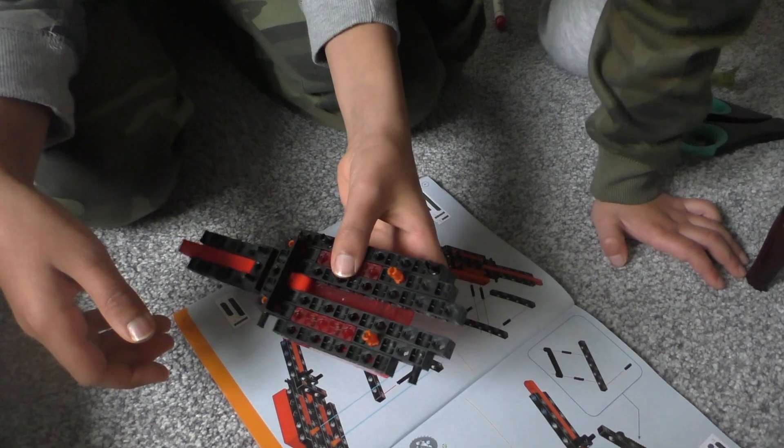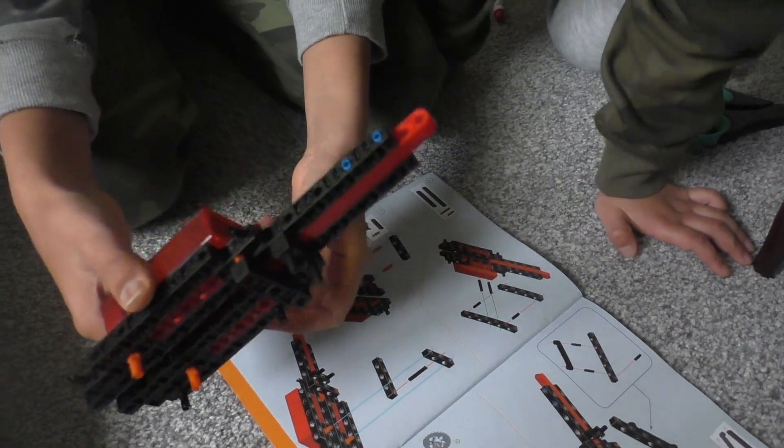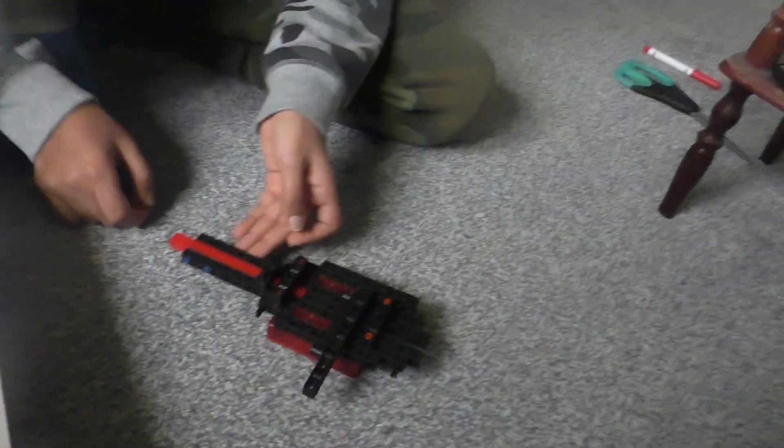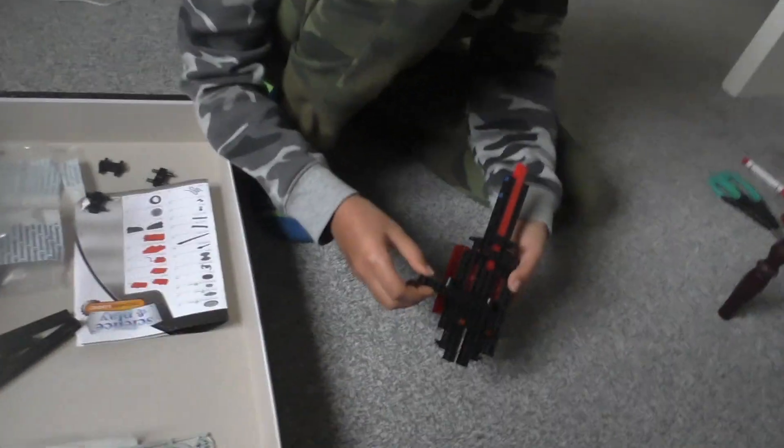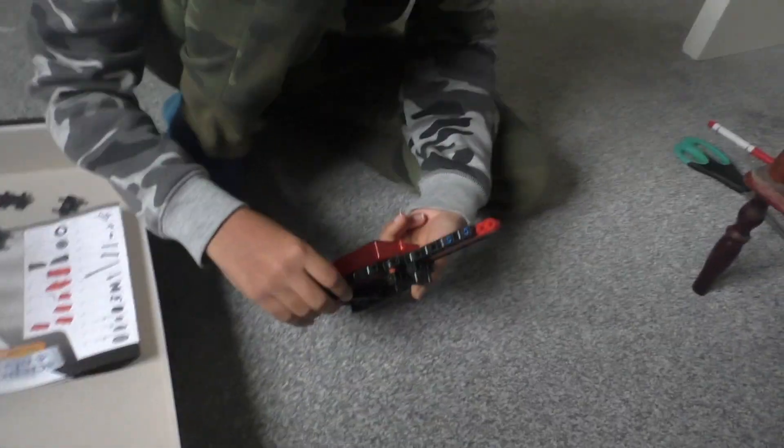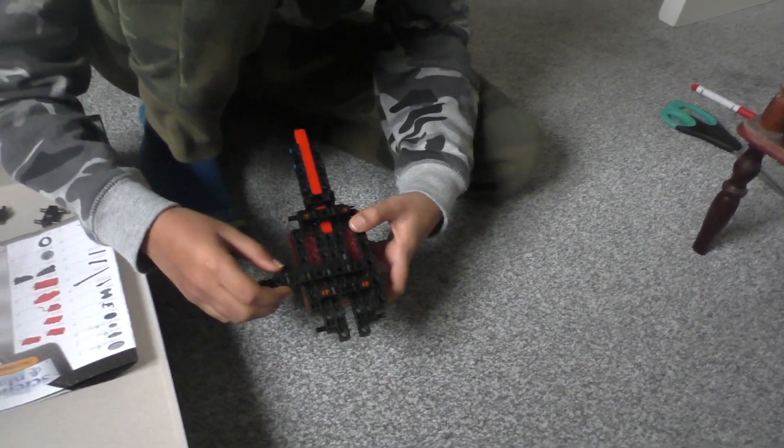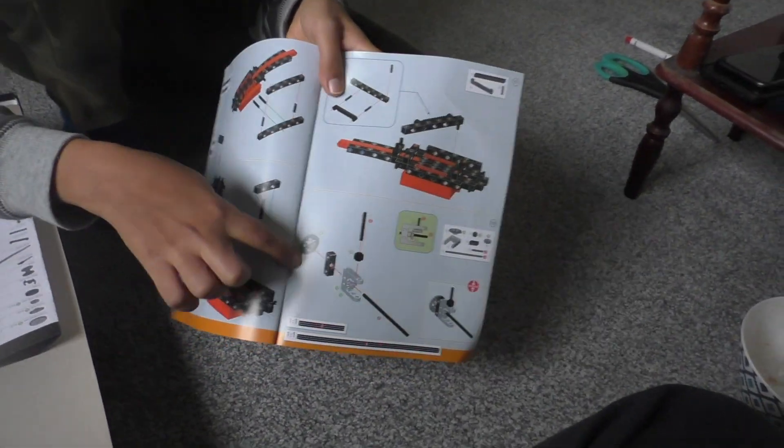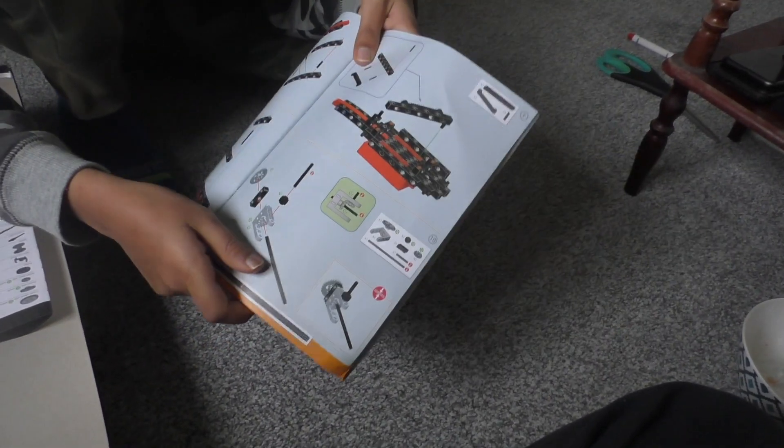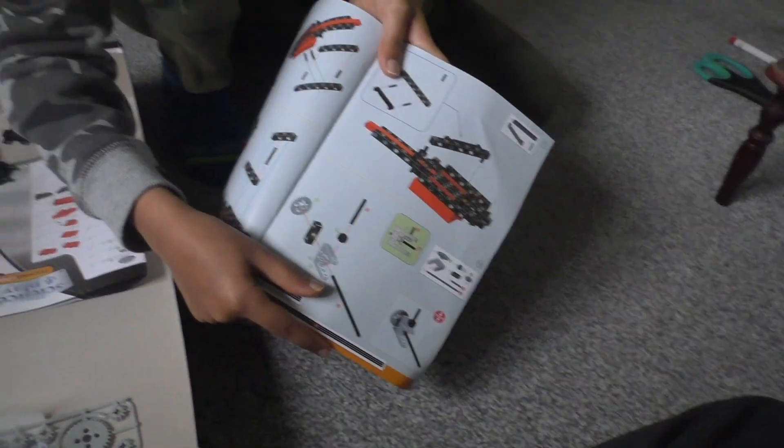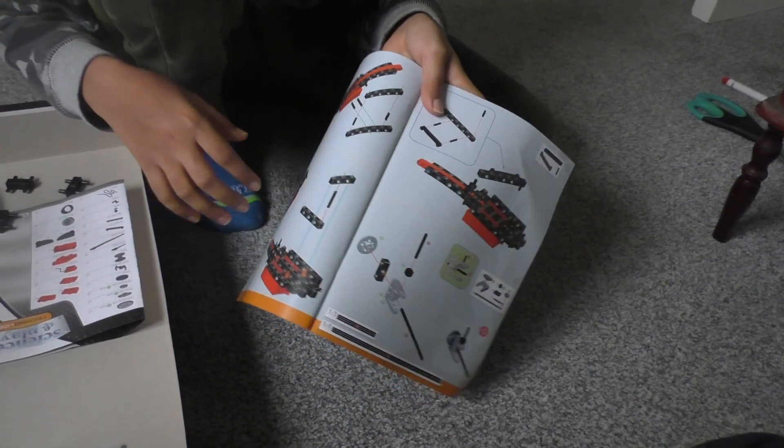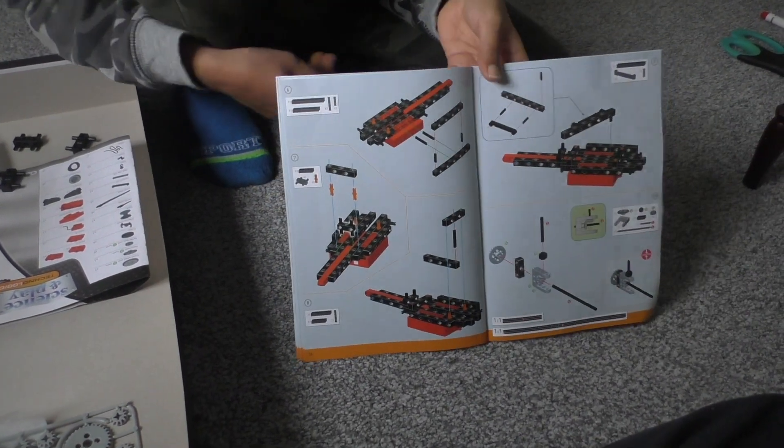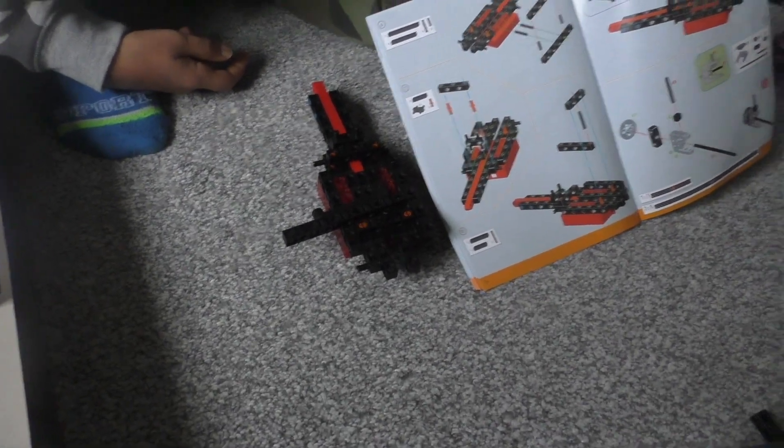Hello, this is update number two. We have put up this rope thing here, we don't know what we'll do with it yet. But we're going on to all the gear gears and pulley parts right now. Looks like it's very complicated. We'll see how long this will take. This will probably take us more than one hour. We'll see in update three.